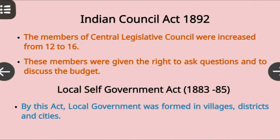So, keeping in mind the demands of the Indian people, the Act of 1892 was passed, known as the Indian Council Act 1892. Under this Act, many reforms were made, such as the number of additional members of the Central Legislative Council was increased from 12 to 16.